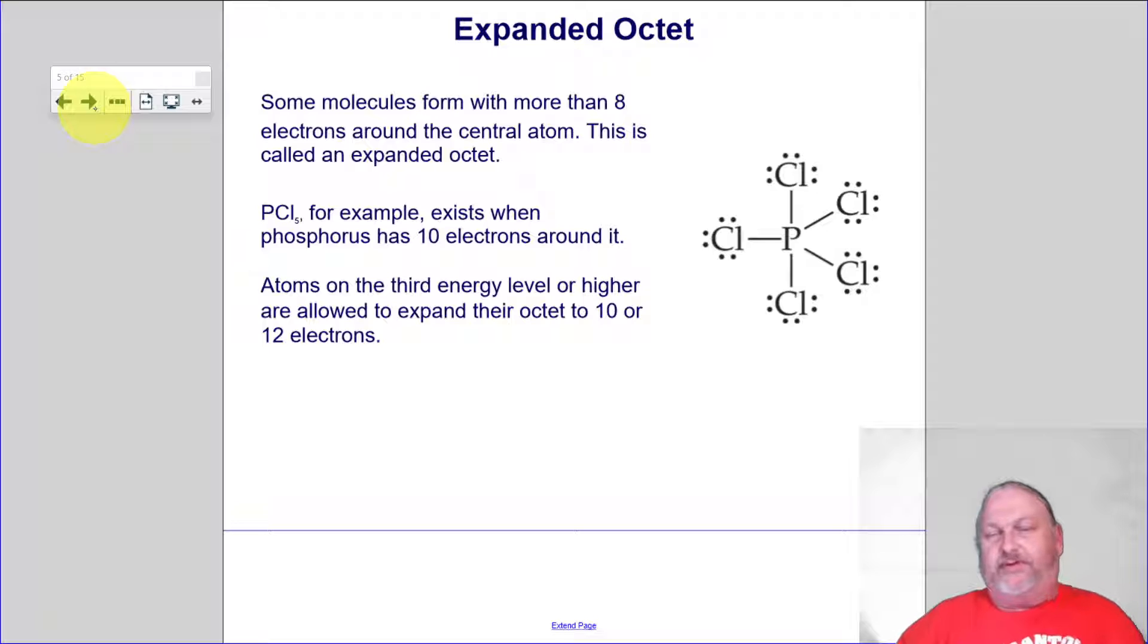So if you've got phosphorus pentachloride, you're going to have more than an octet. Phosphorus has ten electrons around it. And we draw it like this. And again, this sort of explains it. Atoms on the third energy level or higher can expand their octets to ten or twelve electrons.